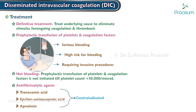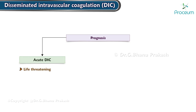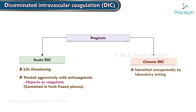Prognosis. Acute DIC may be life-threatening and should be treated aggressively with anticoagulants such as heparin, or the coagulants contained in fresh frozen plasma. Chronic DIC is sometimes identified unexpectedly by lab testing.